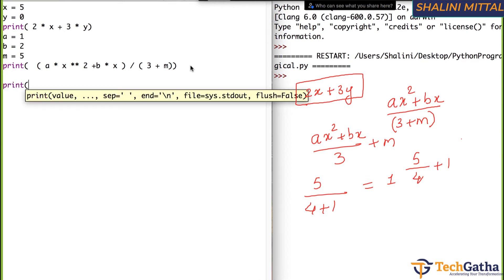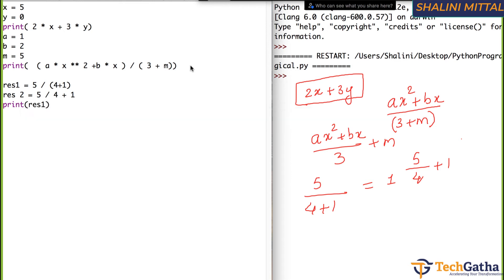So if I write print or you can also write, say result is equals to 5 divided by round brackets 4 plus 1. And I can say res2 is equals to 5 divided by 4 plus 1. Let's print res1 and let's print res2. Save it and evaluate.